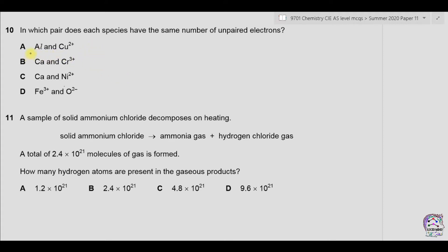Let's find the number of protons of each element. Aluminium has atomic number 13, copper has 29, the atomic number of calcium is 20, chromium is 24, nickel is 28, iron is 26 and oxygen is 8.